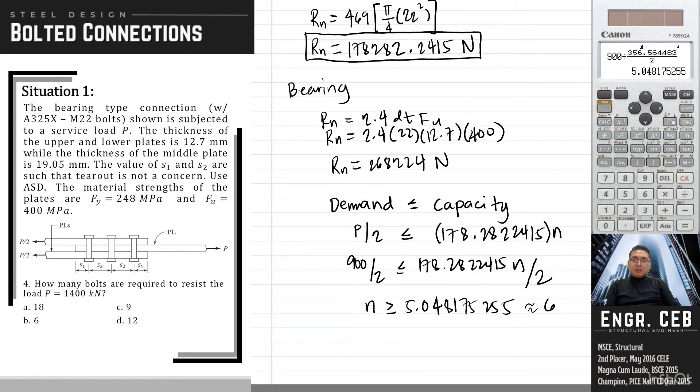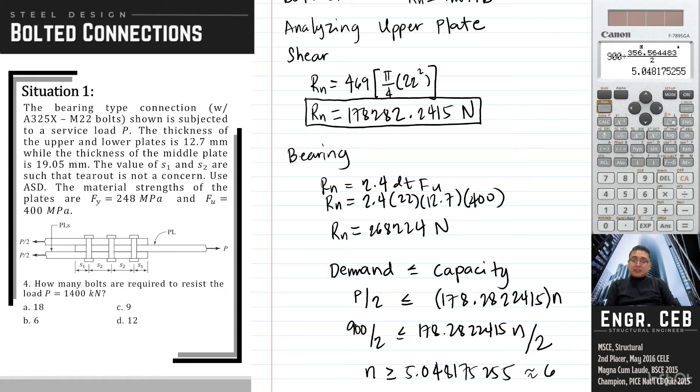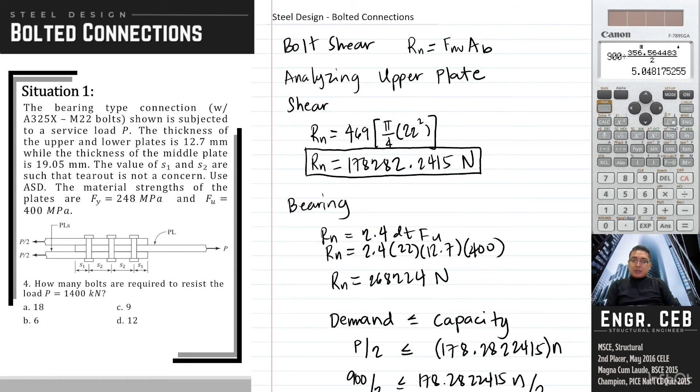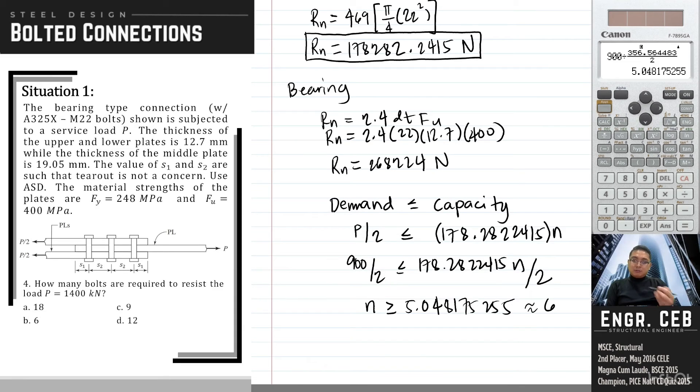Problem 4: how many bolts are required to resist the load T equals 1,400 kilonewton? So we will just repeat the process. The nominal strength of the bolt will not change. So considering the upper plate and the middle plate, we obtain the same answer. So we can choose to do this once only. So we change the value of 900 to 1,400. So N should be greater than 7.857. So as you can see, based on the choices, the nearest value that is greater than 7.85 is 9.